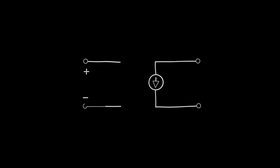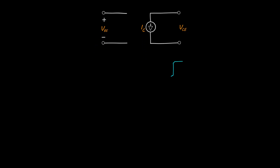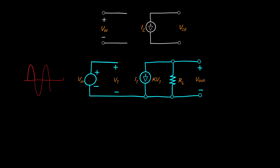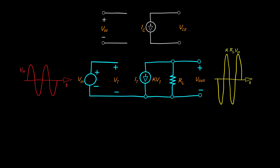A voltage amplifier, as we saw earlier, is nothing more than a voltage-controlled current source. You apply a voltage to the input to get a current. That current is injected into an output resistance, forcing the voltage across it to be a scaled version of the input.